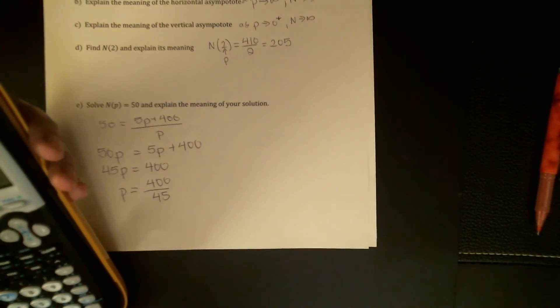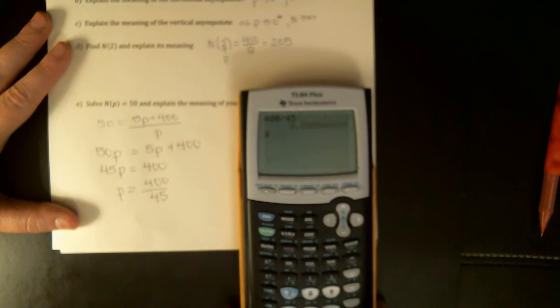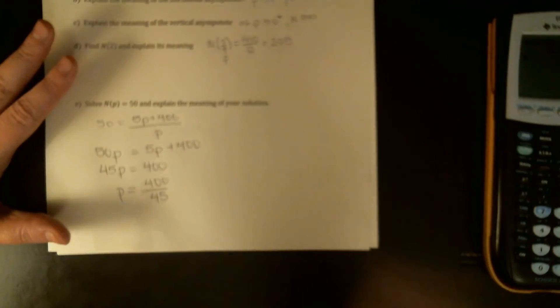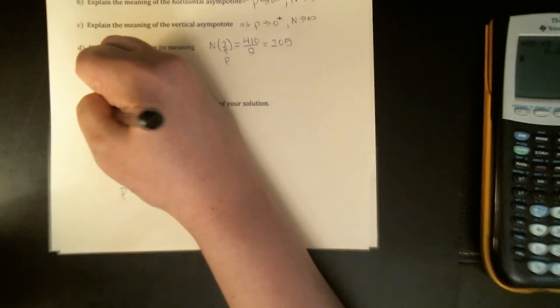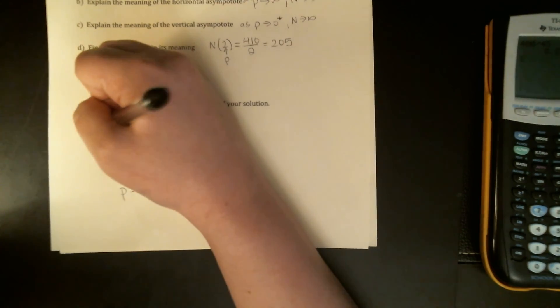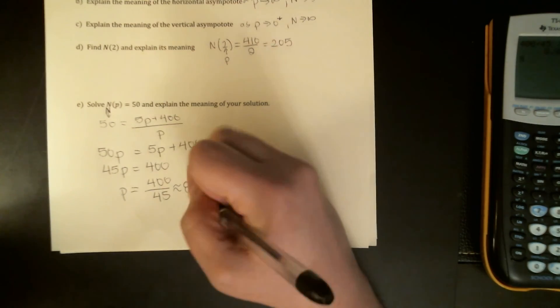In the ballpark of 10, a little less than 10. So 400 over 45. I'll write it down for you, 8.89 approximately. So this is saying if we want the demand to be 50 gallons of milk, so this was an n, right? If we want the number of gallons sold to equal 50, if we want to sell 50 gallons of milk, we can charge $8.89 per gallon.